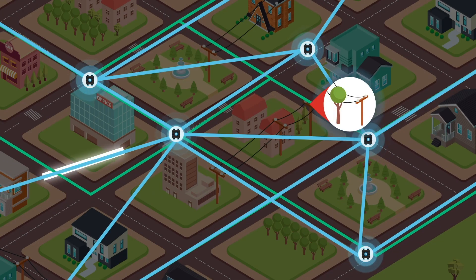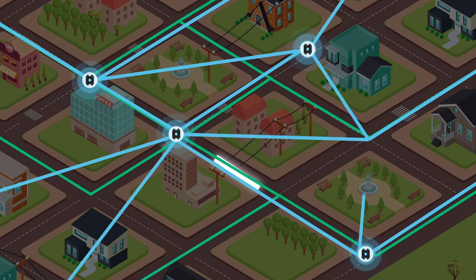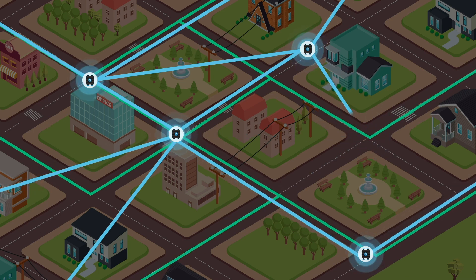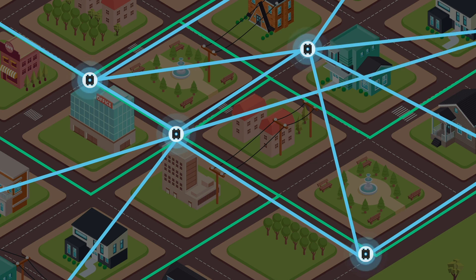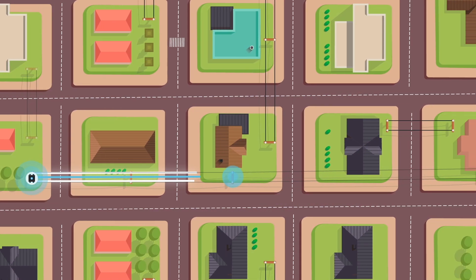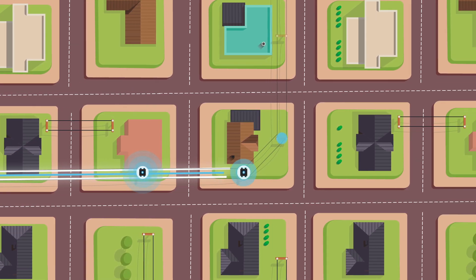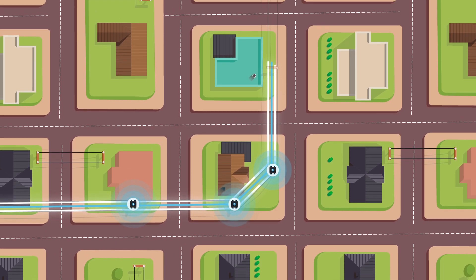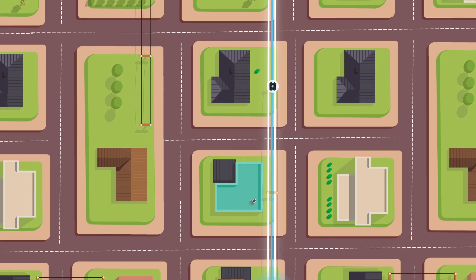If faced with interference or a node outage in a certain area, the network will dynamically reroute communications over the next best available path, just like the grid does with power, to maintain mission-critical performance. Multiple links create high capacity, and because breadcrumbs can be deployed virtually anywhere, the network can follow your grid pattern down to the street level.